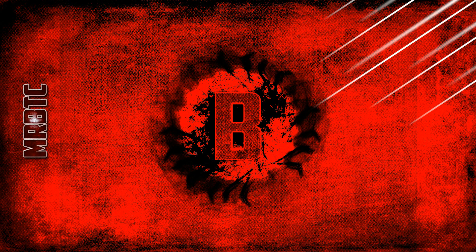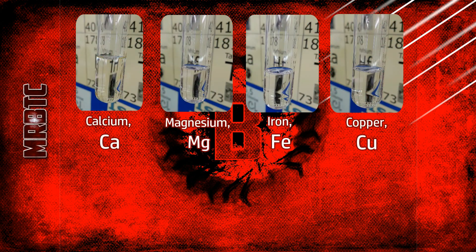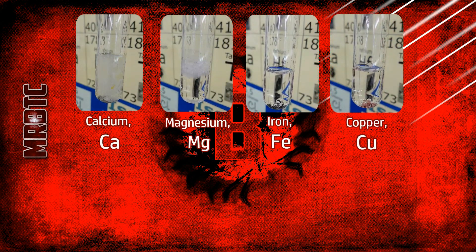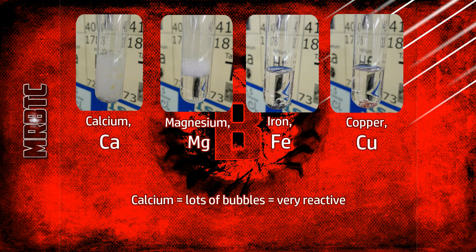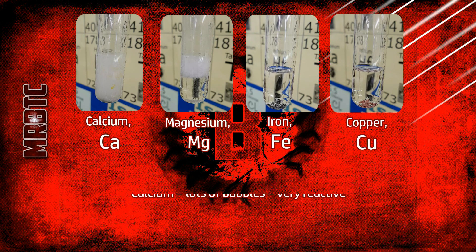Looking at a few examples: if I put calcium, magnesium, iron and copper into hydrochloric acid you can see they're all reacting slightly differently. Calcium is producing a lot of bubbles with a lot of fizzing, therefore there is a lot of hydrogen gas being produced. It is very reactive.